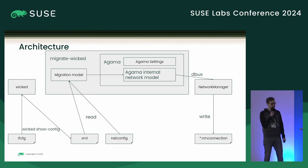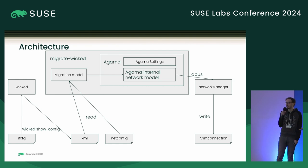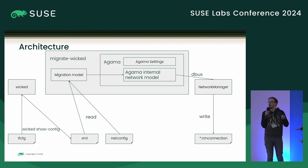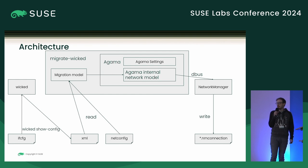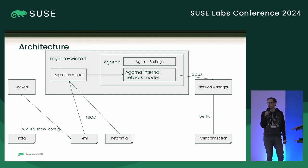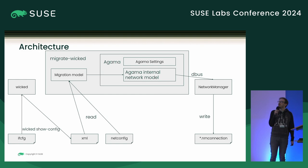This whole illustration represents what's going on inside the container. We start at the bottom left with the ifcfg config files, which will be mounted from the host to the container. Then we run the Wicked show config command, which makes the Wicked client read the ifcfg files, does its own logic and validation, and outputs the Wicked state in XML form. We also have the netconfig file — as previously said, this isn't part of Wicked, so it also needs to be mounted from the host. These two files are then read by the migration tool into our own migration model.